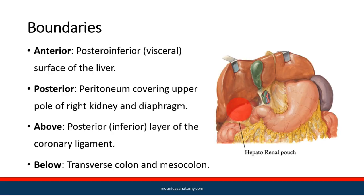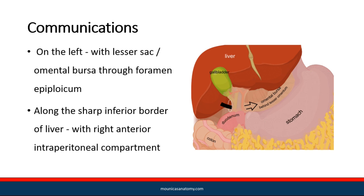The anterior boundary is the visceral surface of the liver. The posterior boundary is the peritoneum covering the right kidney and diaphragm above, and the posterior layer of the coronary ligament below the transverse colon and mesocolon. Communications: on the left with the omental bursa through the foramen epiploicum, along the sharp inferior border of the liver.